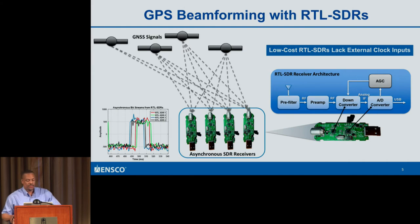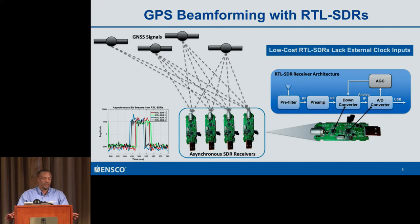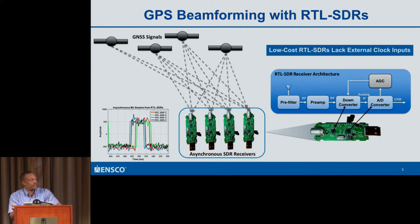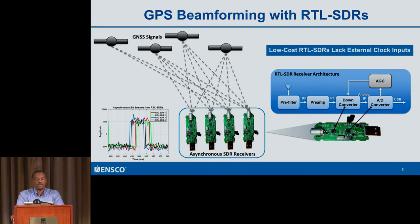GPS beamforming with RTL-SDRs: for the most part they lack external clock inputs and references, so you have an inexpensive software-defined radio that can sample consistently at 2.4 MHz for a sustained stream to disk. You'll have four independent streams streaming across USB. The question is: can you do GPS beamforming with that? And my answer is yes — especially from a GPS standpoint, which provides enough information to extract what's necessary for post-synchronization.